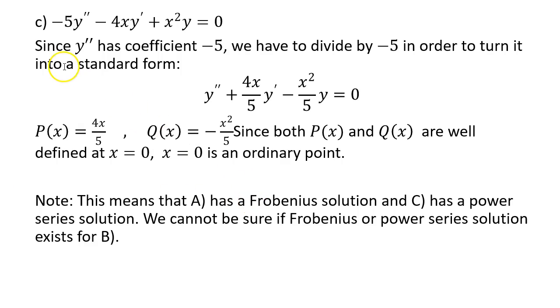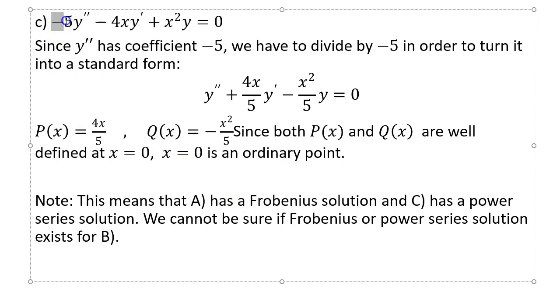Here's a case where you have an ordinary point: if you have a coefficient like negative 5 on y double prime and you divide, you see that the resulting fractions have denominators that are never 0 — they're always defined. In that case x equal to 0 is an ordinary point.